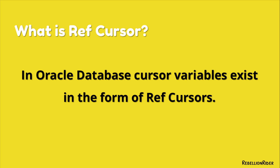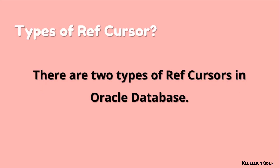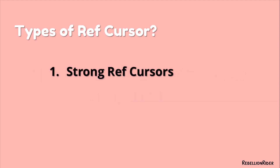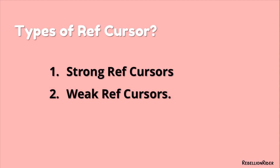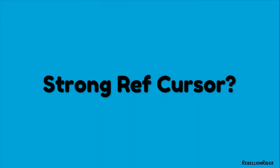Let's go ahead and see how many types of ref cursors we have in Oracle Database. There are two types: strong ref cursors and weak ref cursors.